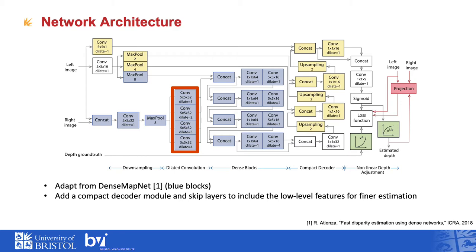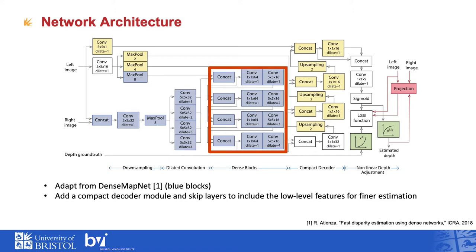Dilated convolution with different dilation factors varying from 1 to 4 is applied. This lets the convolution enlarge the field of view of the filter to incorporate larger complex contexts by expanding the receptive field without loss of resolution. Four one-layer dense blocks are then employed to capture corresponding features. A dense block uses feature maps from multiple preceding layers as input, leading to more connections amongst layers.